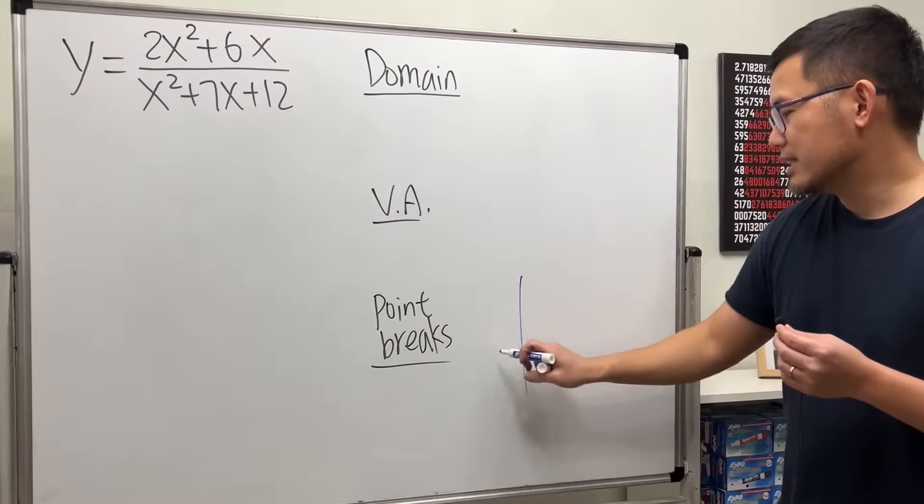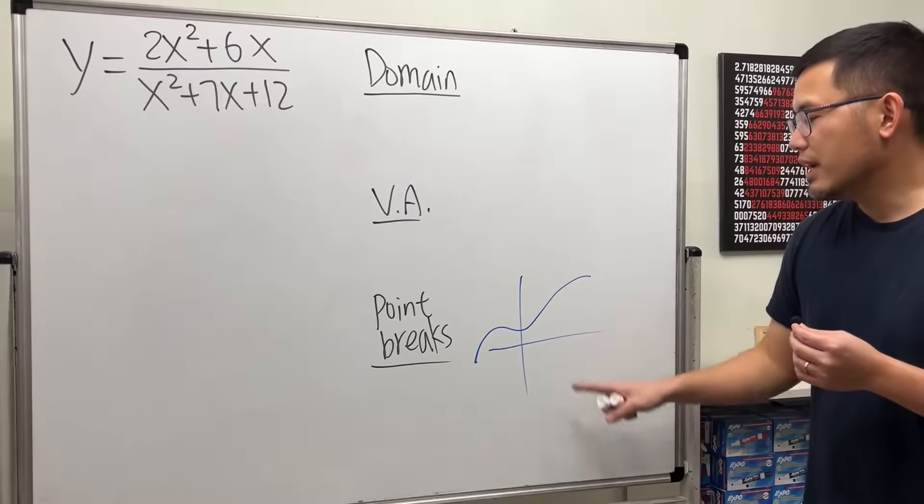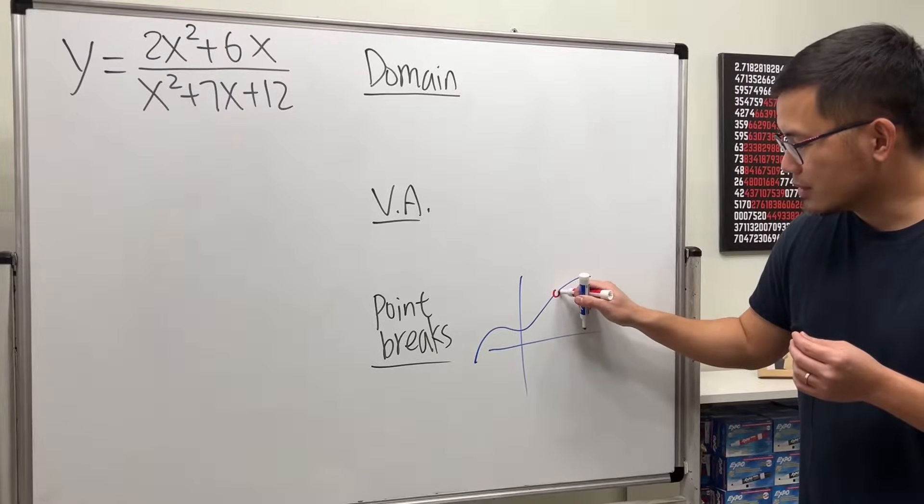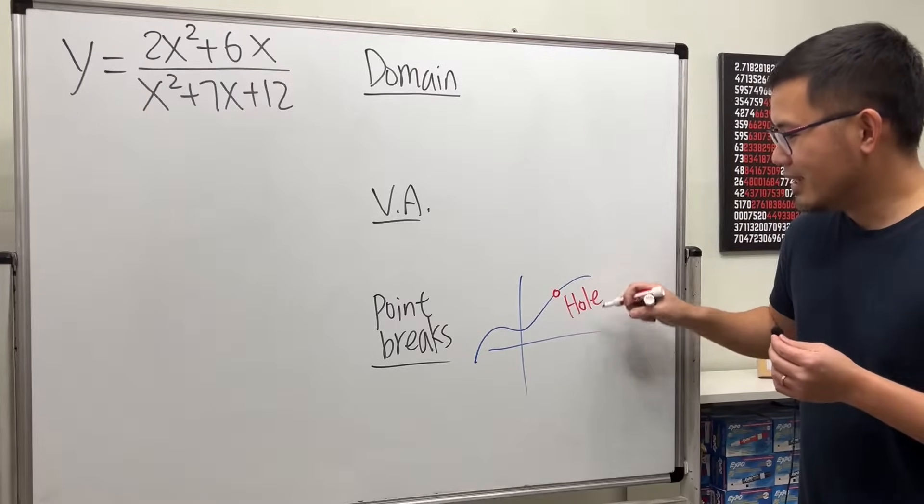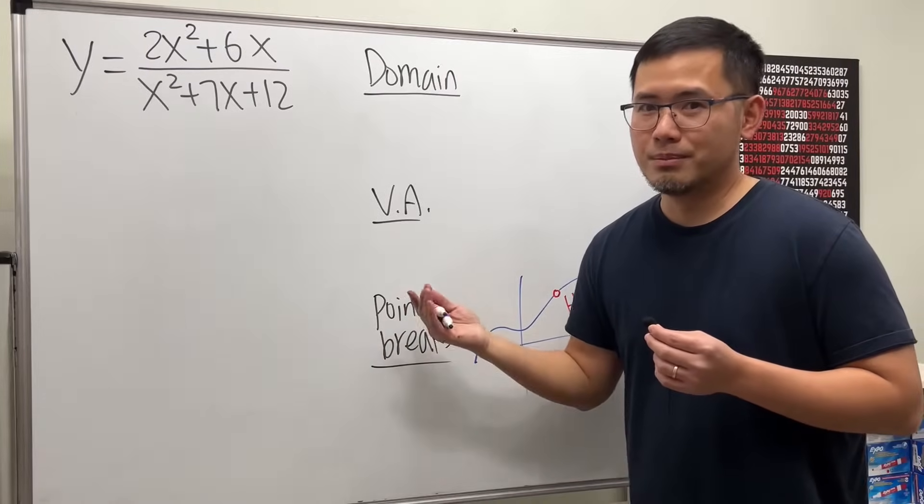I believe this is the case when you have a curve, the graph of the function, and you are just missing a point. And sometimes we just put down a circle like that. So some people call this a hole on the graph. And I think that's what they meant by point breaks.